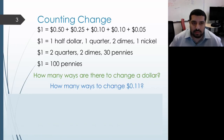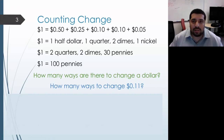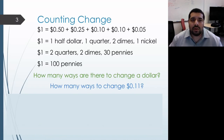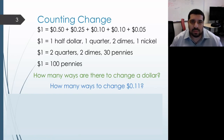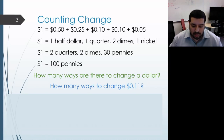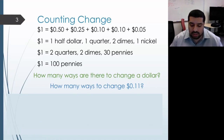Let's consider the problem of making change for a certain amount of money, say for a dollar. The question is: how many different ways are there to do that? For a dollar, we can make change with a half dollar, a quarter, two dimes, and a nickel. Or we can use four quarters, two quarters and two dimes and 30 pennies, 100 pennies, 10 dimes, 20 nickels, and so on. There are a lot of ways to make change for a dollar, and we want to come up with an algorithm and eventually an implementation for computing how many different ways there are to make change for any amount.